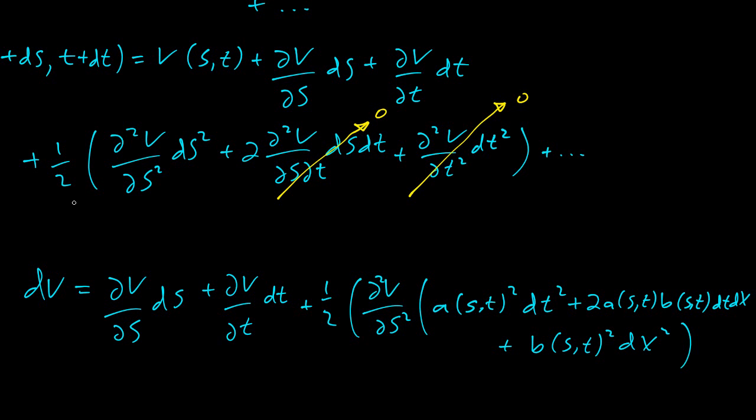And then again, anything smaller than DT, it's going to go to zero. So here we have a DT squared, that's going to zero. DT times DX, that's going to zero. And then DX squared, that is going to DT by the DX squared equals DT rule of thumb.